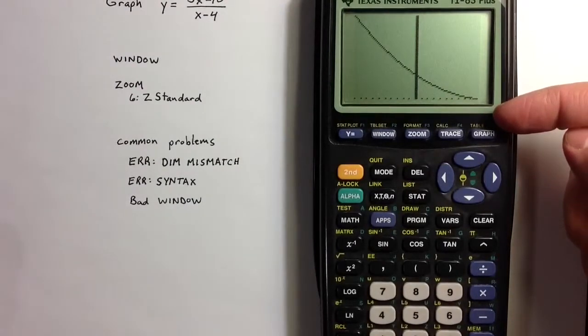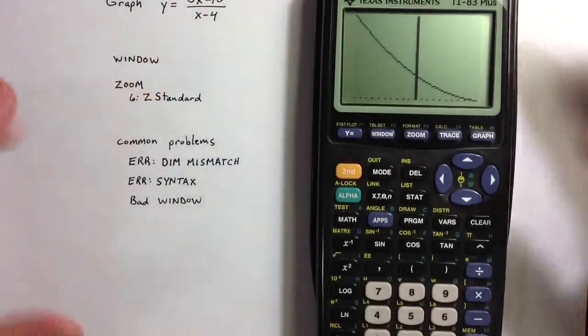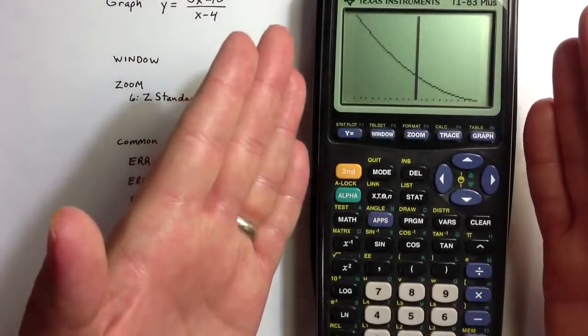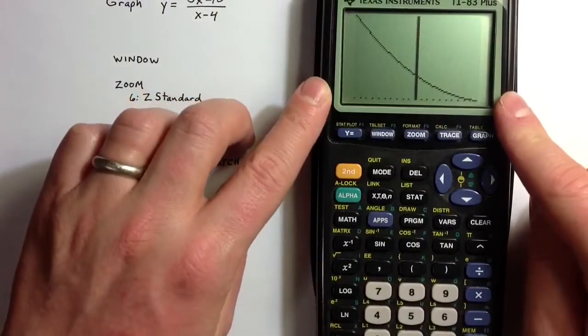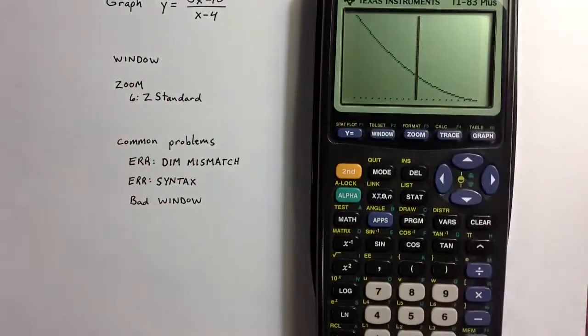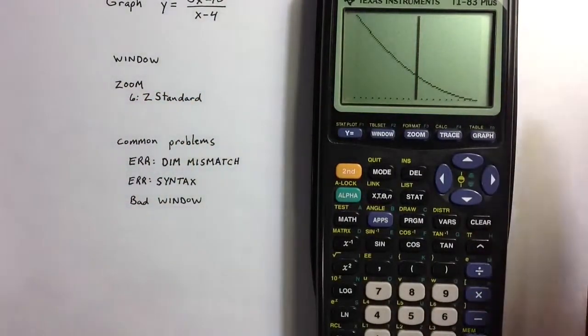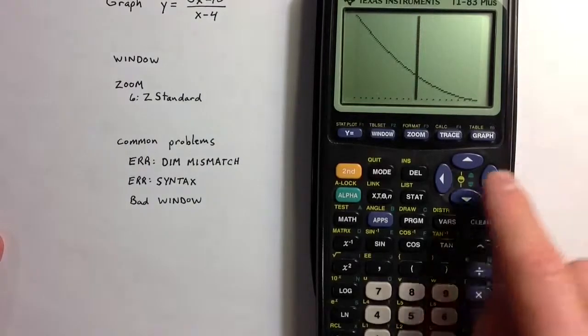And so zoom fit doesn't always give a very good picture, because it will just choose the x values that are given it, and if those aren't a very appropriate range, you'll see some kind of crazy, like odd-looking pictures.